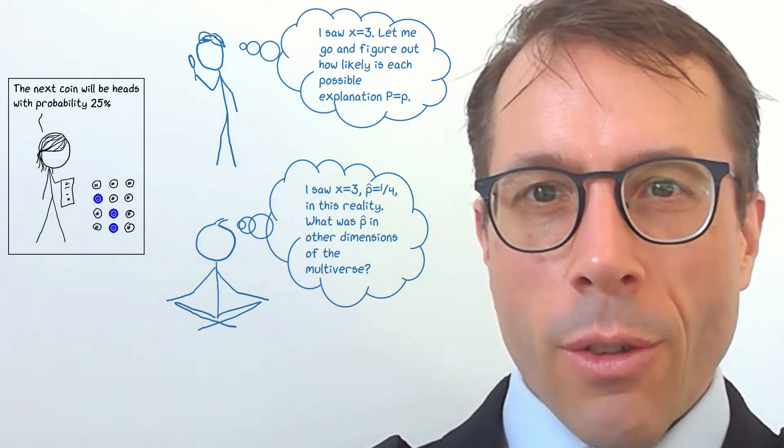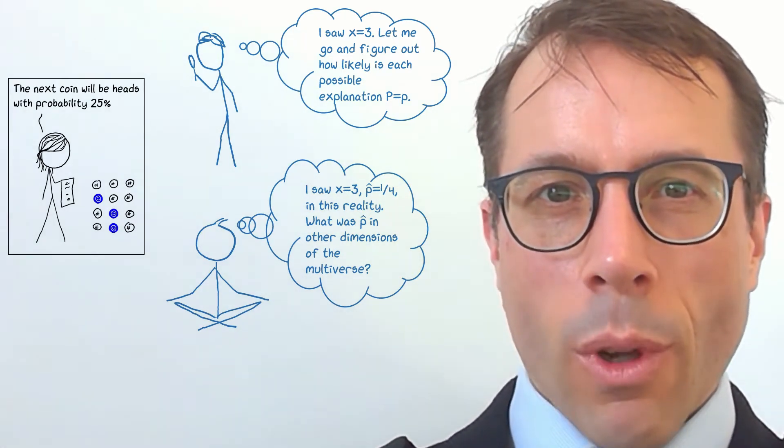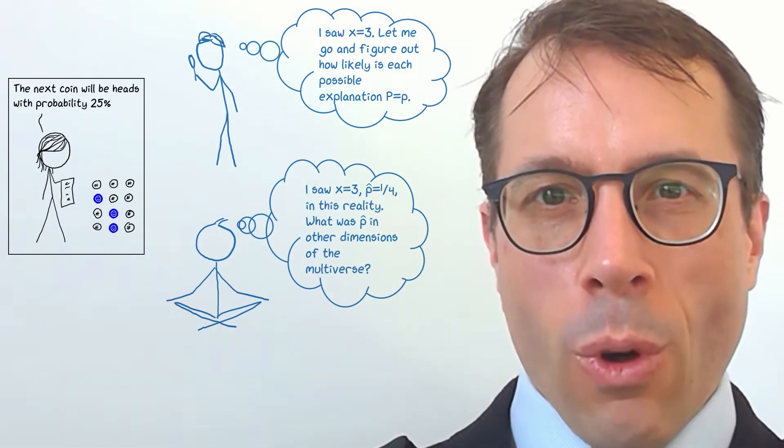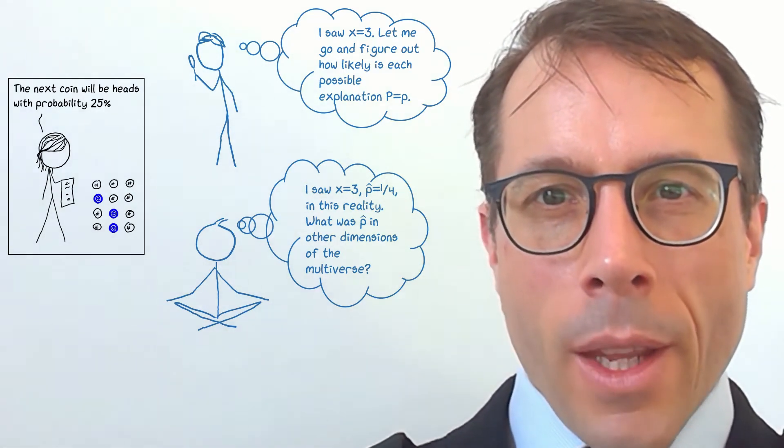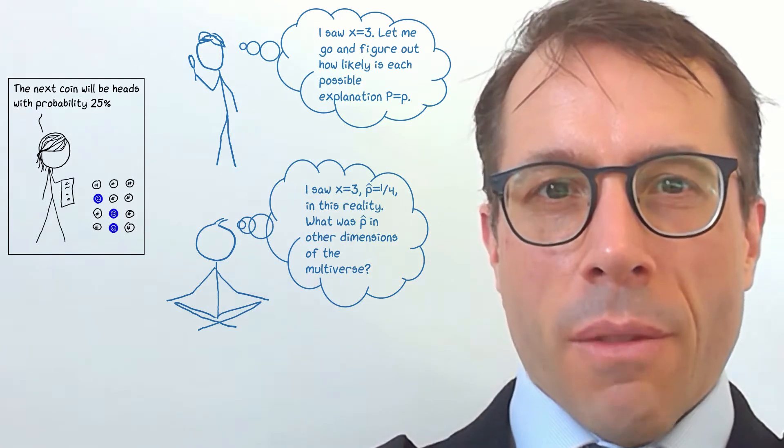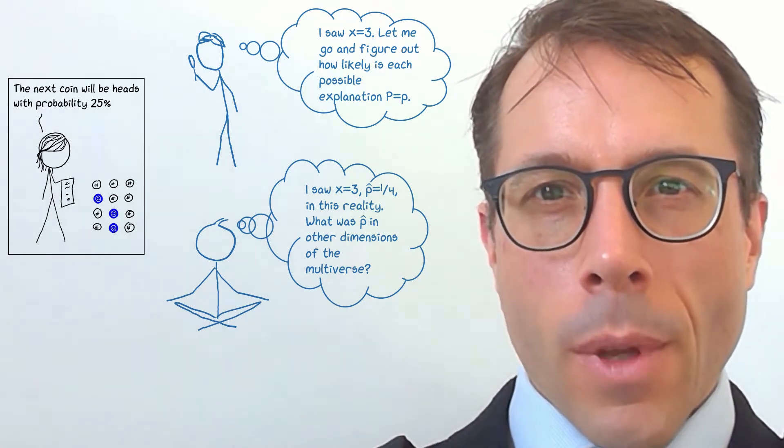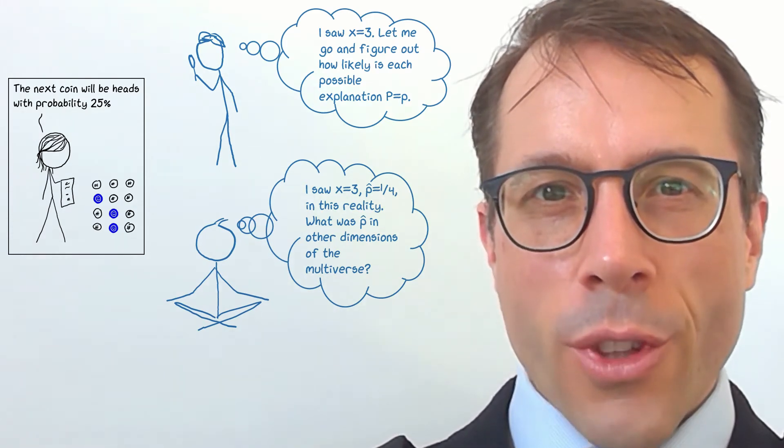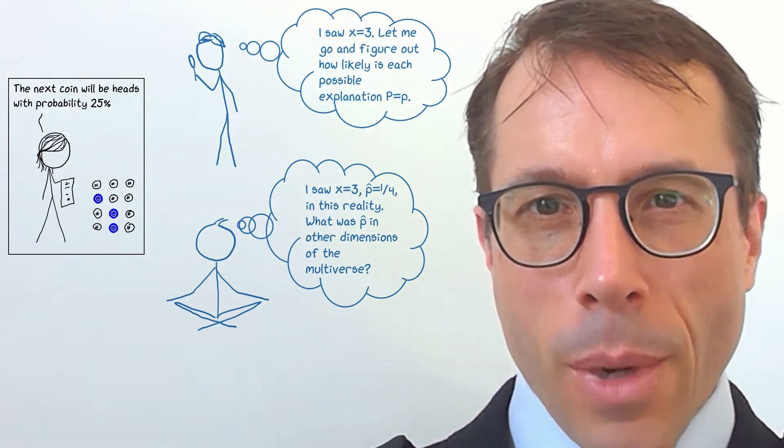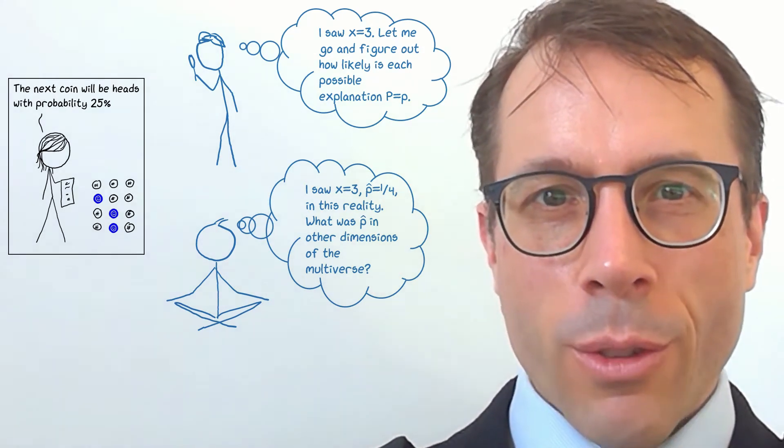If someone in a parallel universe did exactly the same 12 coin tosses, they might well have gotten two heads, or four, or maybe even 12. It's crazy to base our scientific inferences on an outcome that's contingent, that's just chance. Much better to look across the entire multiverse, and think about all the parallel experiments and parallel data scientists in every parallel universe.